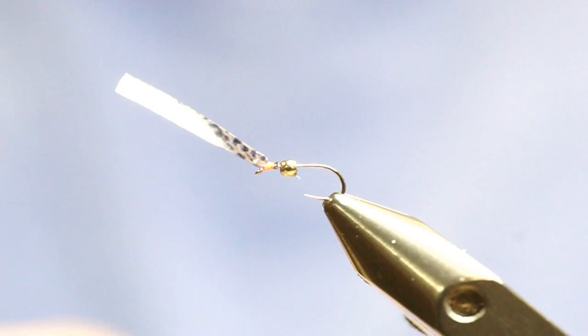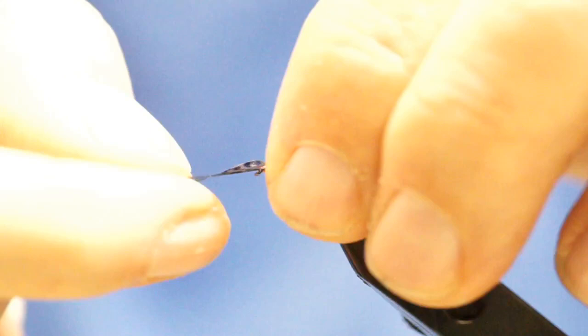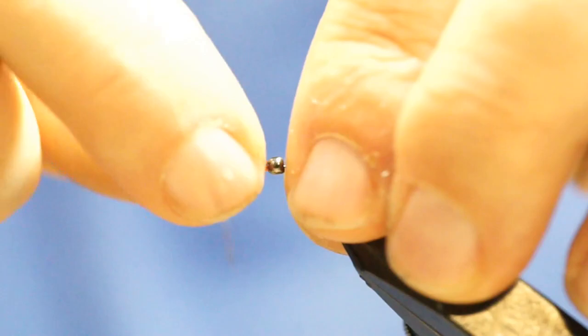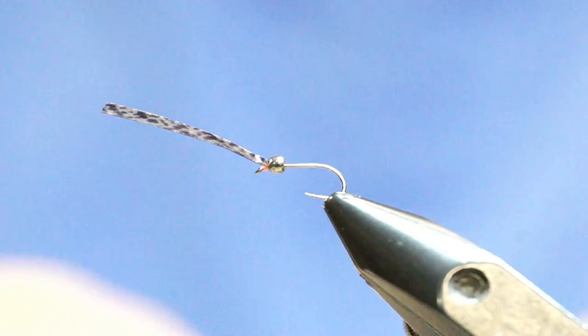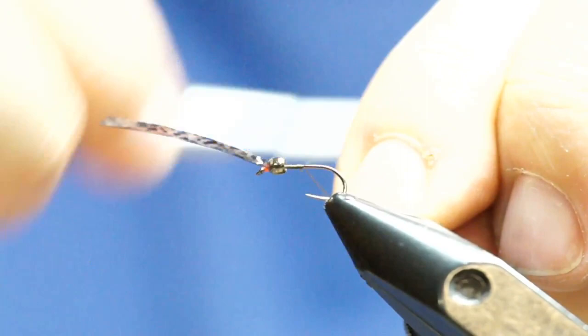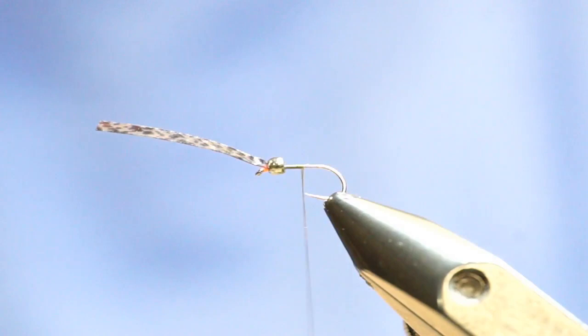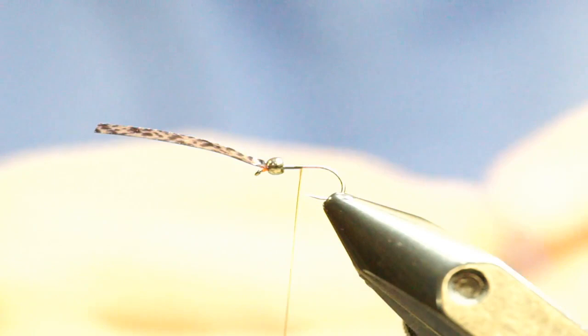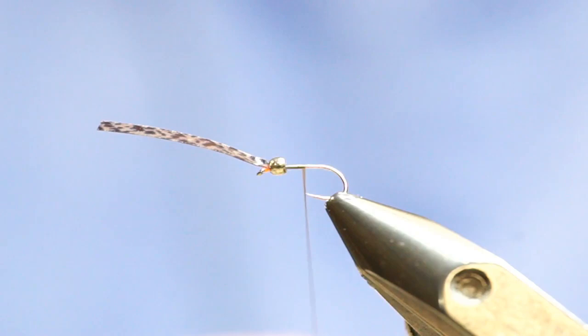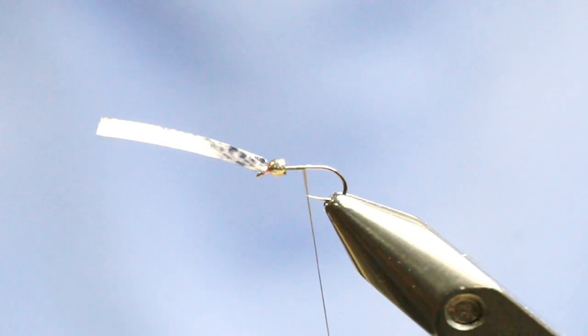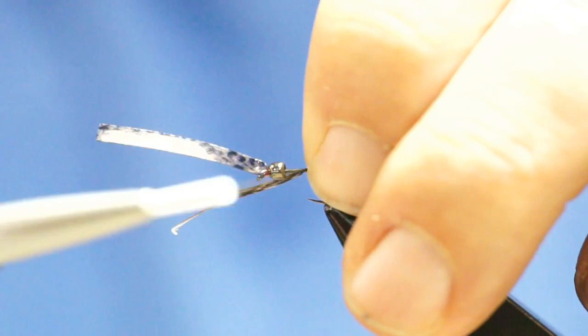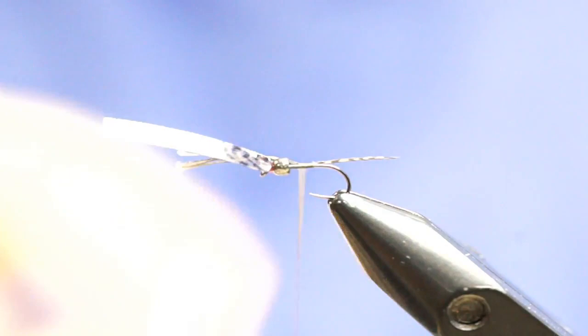Now, we're going to grab the olive thread. You could use brown or black. The bead comes up right against where that thin skin is mounted. Ultimately, I'm going to pull this over the top and create this wing case. But we'll attach our olive thread here. First thing is to tie in some Coq de Leon for the tail. I'll just grab a few Coq de Leon fibers.